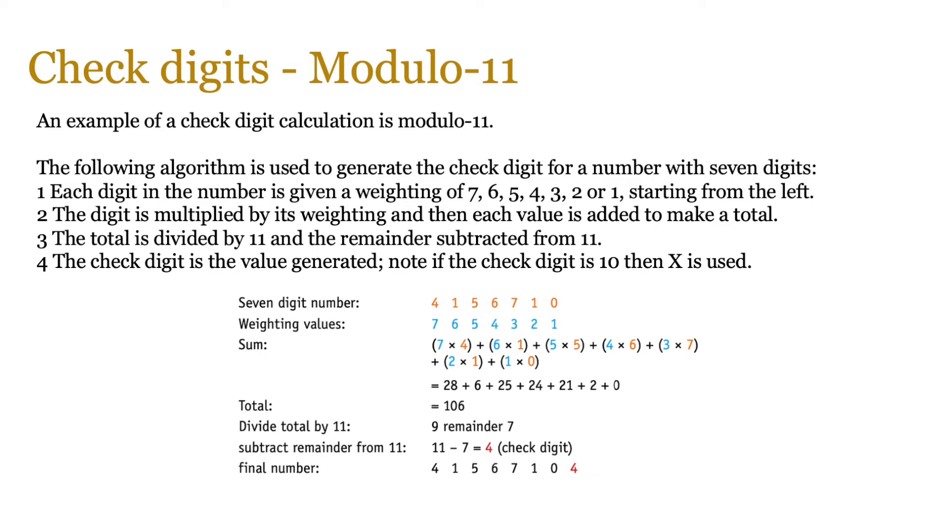Now, the computer this data is entered into also runs the calculation, and it checks the rightmost bit. And if the number matches 4, then it accepts the data as being accurate; otherwise, it rejects it.